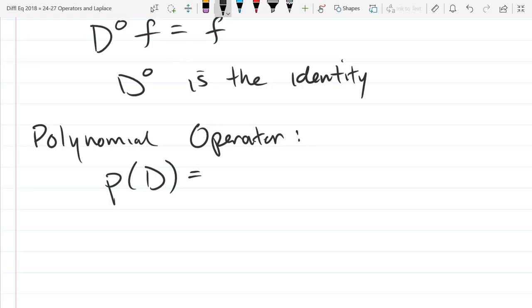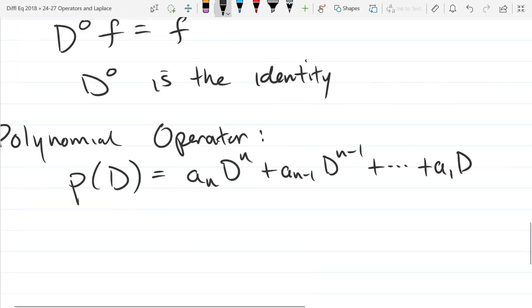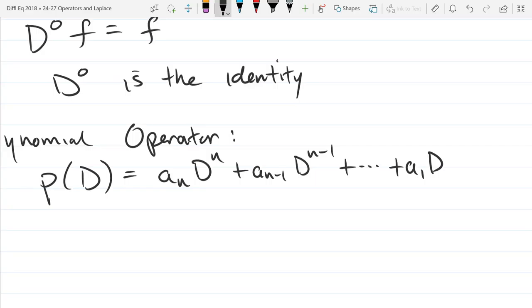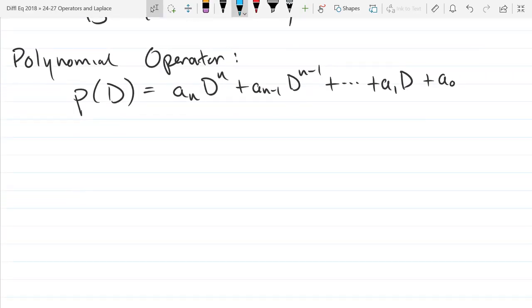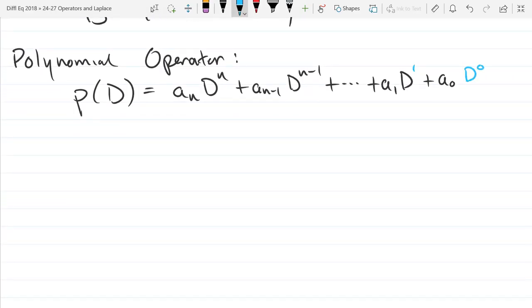Our polynomial's name is p, the input is D. Polynomial is going to be a_n D^n plus a_{n-1} D^{n-1} plus a_1 D. You don't need to write D to the first, unless you want to. And you don't have to write D to the 0 right here if you don't want to. You can save some ink. I recommend don't write down what I put in blue though.